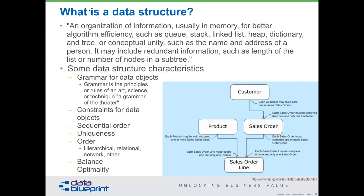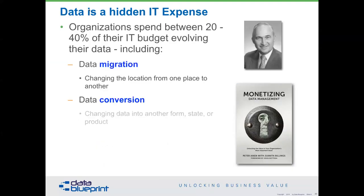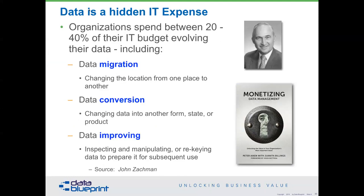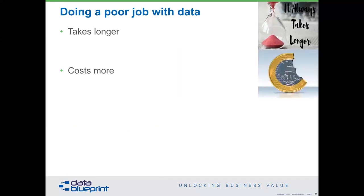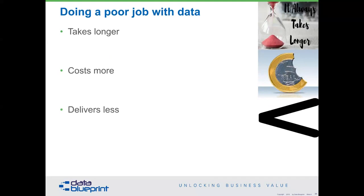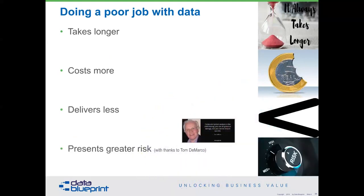Because we've only educated a portion of the population — not the knowledge worker portion, just the IT data people — about what is the data structure. You can see the computer science definition and example of how a customer is related to a sales order, a product, a sales line — it contains the grammar, the rules for describing it, the constraints, whether it's sequential or unique, whether it's arranged hierarchically, relationally, or in a network fashion. These are all different characteristics of data structures. Data structures that are bad cause organizations to spend between 20% and 40% of their IT budget on remediation. Doing a poor job with data means whatever you're doing is going to take longer, cost more, deliver less, and present greater risk — stolen from Tom DiMarco, who did a wonderful job describing this.